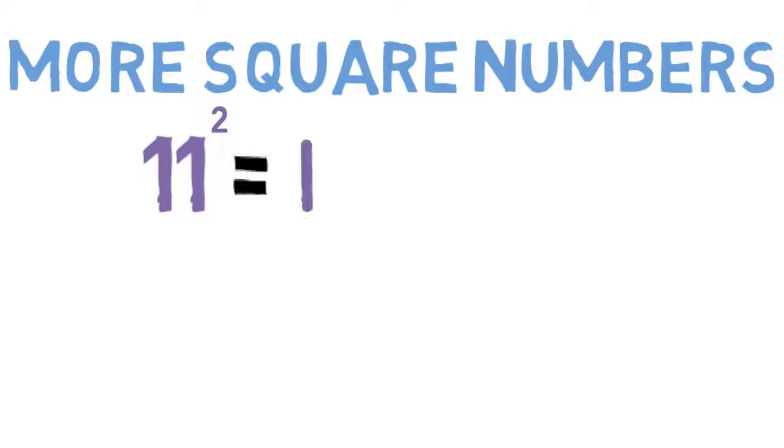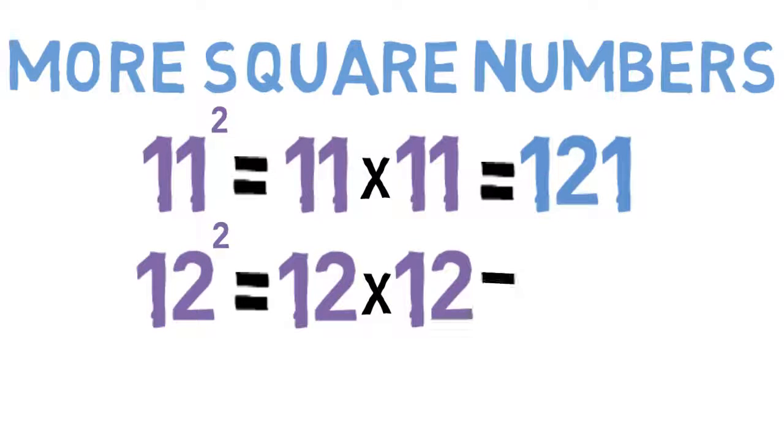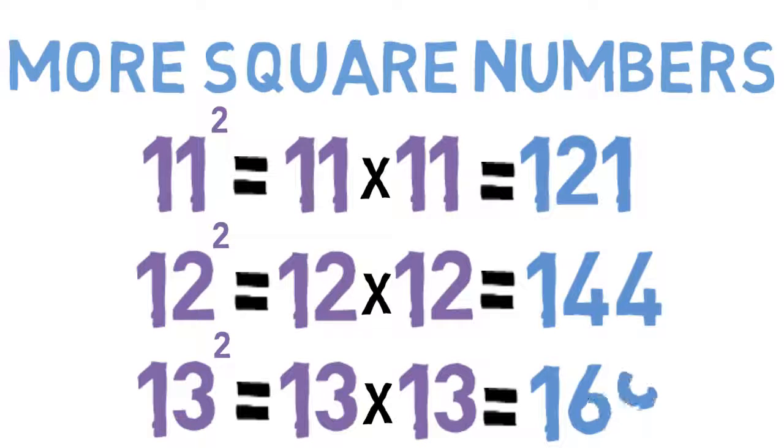11 squared equals 11 times 11, which equals 121. 12 squared is 12 times 12, which equals 144. 13 squared, which equals 13 times 13, is 169.